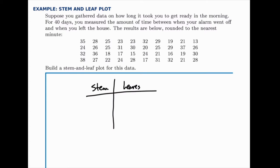So if you look through, you'll notice that all these numbers start with either one, two, or three. That's the first digit. So our stems could be one, two, or three.